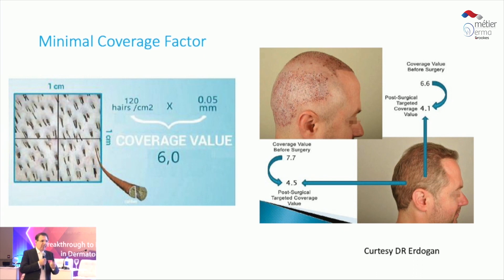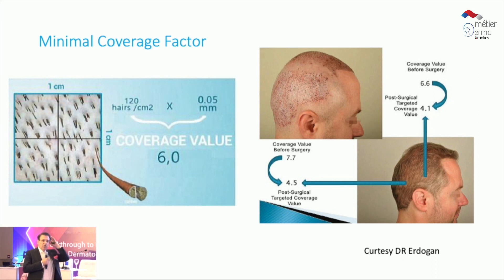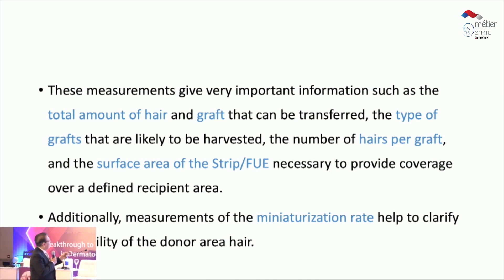If you do more than the minimum coverage threshold, you get a thinning effect. Some surgeons think reducing the donor area and redistributing it to the top equally distributes density, but I believe the normal aging process gives you thicker hair at the back and thinner on top — so that looks more like a natural aging process.